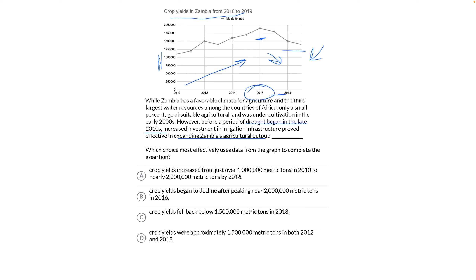Choice A: Crop yields increased from just over 1 million metric tons in 2010 to nearly 2 million metric tons by 2016. Let's check the graph — is that true? Yes, just over a million in 2010, and just under 2 million in 2016. So this is probably our answer. I'm going to put a little check mark next to it, but let's check out the other ones just in case.